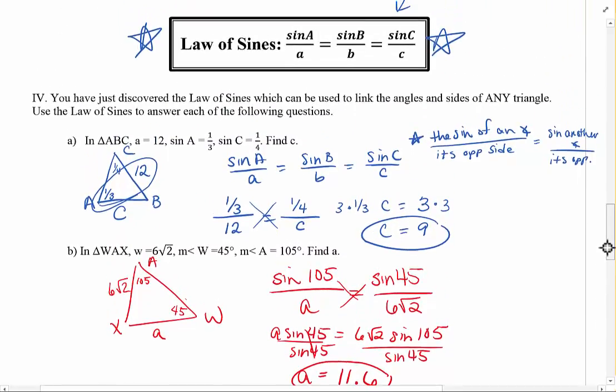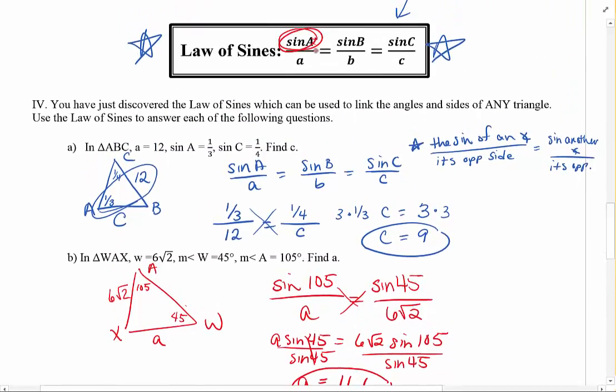And really, that's the law of sines. The law of sines just says you take the sine of an angle, put it over its opposite side, set it equal to the sine of another angle, doesn't matter which one, over its opposite side, and cross multiply. Wham, bam, thank you, man, and you're done.